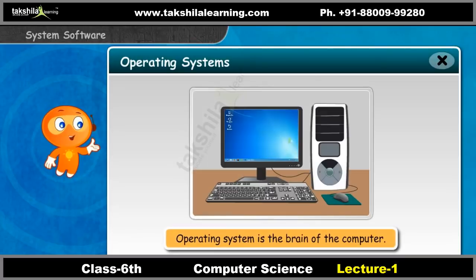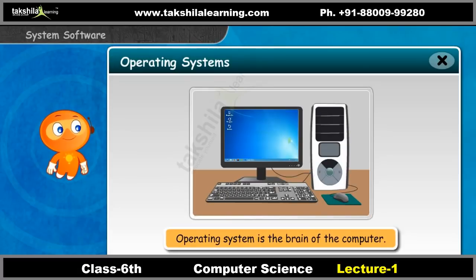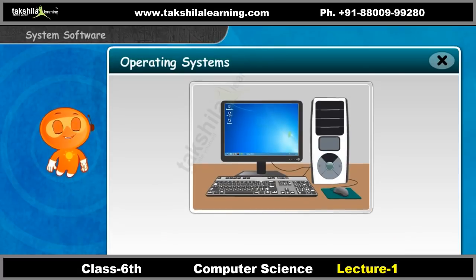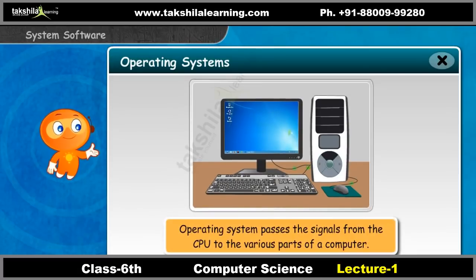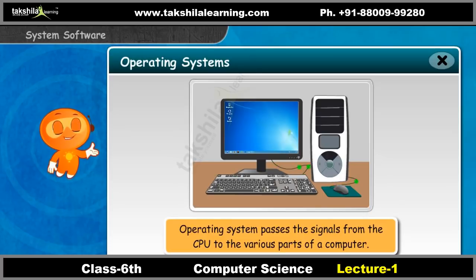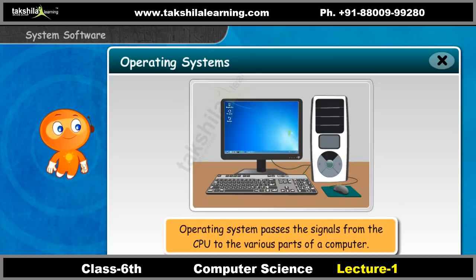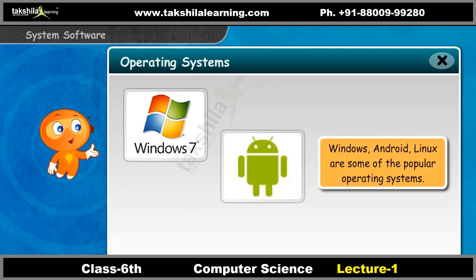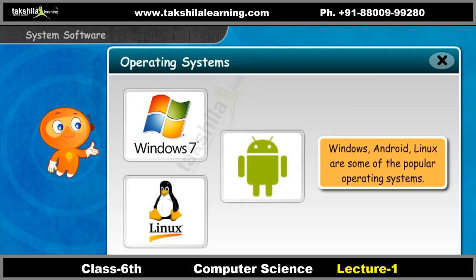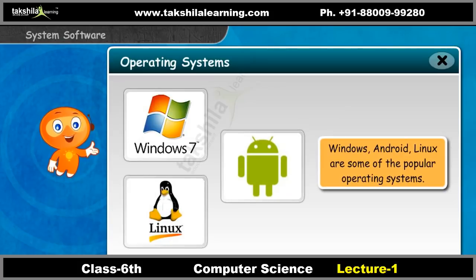The operating system is the brain of the computer. It passes signals from the CPU to the various parts of a computer. Windows, Android, and Linux are some of the popular operating systems.